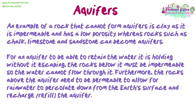For an aquifer to be able to retain the water it is holding without escaping, the rocks below it must be impermeable so the water cannot flow through it. Furthermore, the rocks above the aquifer need to be permeable to allow for rainwater to percolate down from the earth's surface and recharge, or refill, the aquifer.